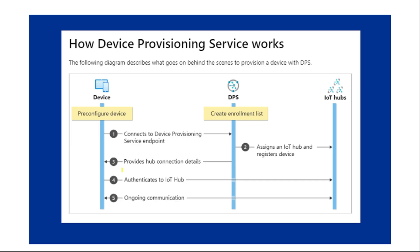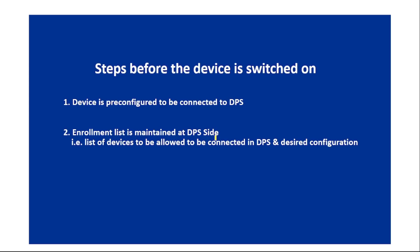Before discussing the detailed flow, we need to ensure two things before the device is switched on. First, the device should be pre-configured to connect to DPS — the connection details of DPS are stored in the device when it is manufactured. Second, an enrollment list is maintained at the DPS side, which contains the list of devices that can connect to that DPS and what desired configuration each device should have.